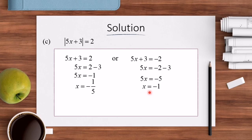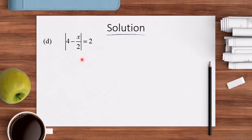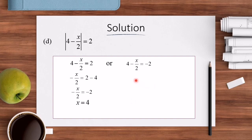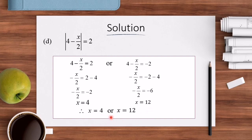For the solution to Question D: |4 − x/2| = 2. Since this is 1 absolute value, we straight away use the basic definition: 4 − x/2 = 2 or 4 − x/2 = −2. For the first case: −x/2 = 2 − 4, so −x/2 = −2, giving X = 4. For the second case: −x/2 = −2 − 4, so −x/2 = −6, giving X = 12. Therefore the final answer is X = 4 or X = 12.